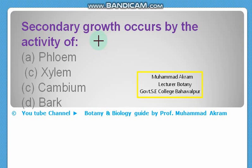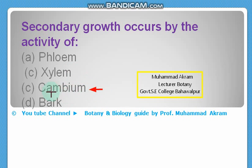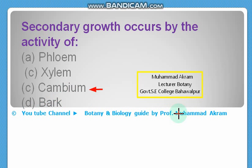Secondary growth occurs by the activity of — phloem? No. Xylem? No. Cambium? Yes, the right option is cambium. Secondary growth occurs by the activity of cambium. Do subscribe my channel, Botany and Biology Guide by Professor Muhammad Akram.